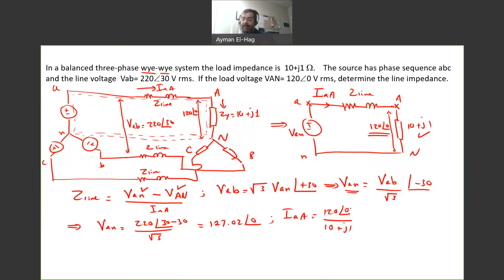I'm dividing a polar number with a rectangular. We cannot do that. So we have to convert that rectangular into another polar number. So this is 120, angle of 0, divided by 10.05, angle of 5.71. So from this, you can say that your IAA is equal to 11.94, angle of minus 5.71. And here, I'd like to pause a little bit and see if this result makes sense or not.